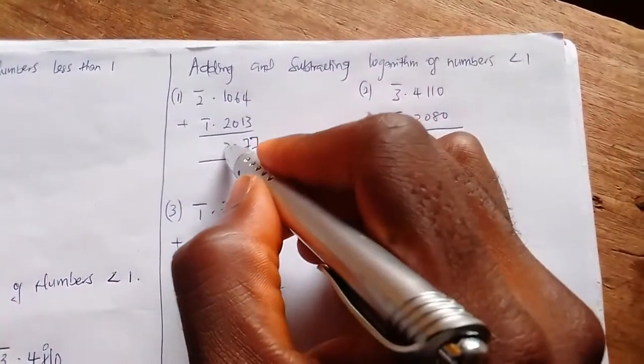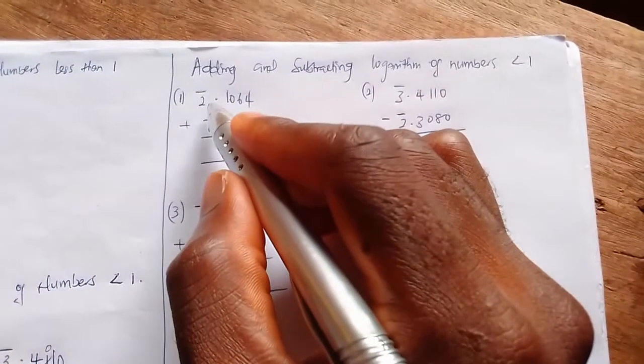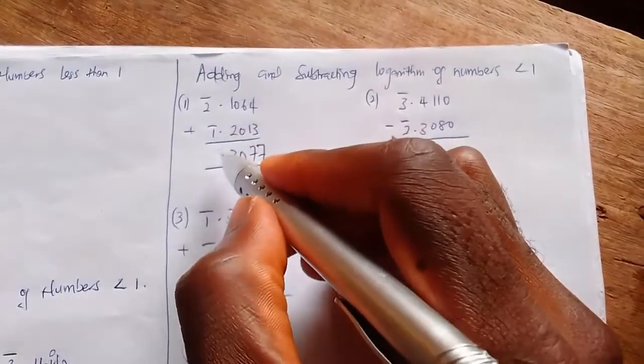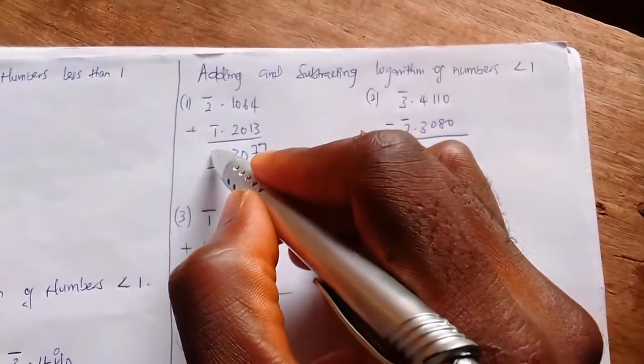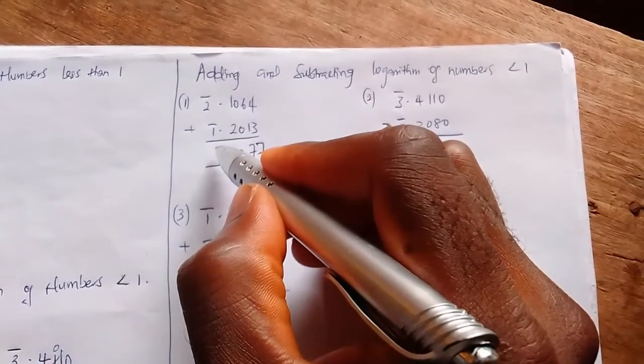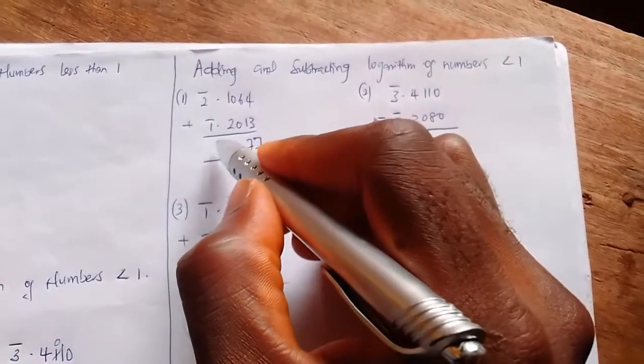Because bar two represents minus two, and bar one represents minus one, therefore minus two plus minus one gives us minus three.